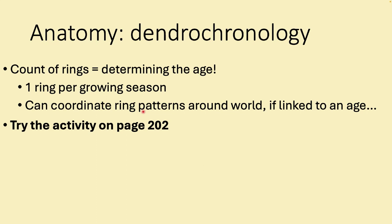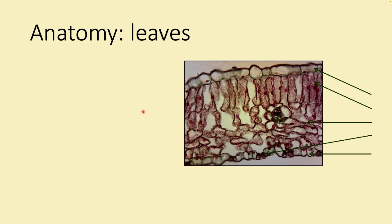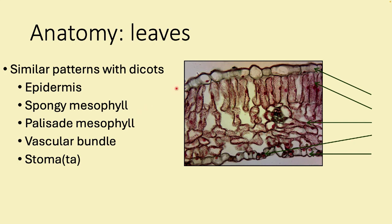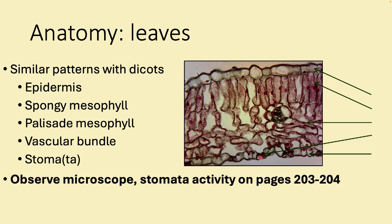Looking at a dicot leaf cross-section: the outer layer is the epidermis. The middle of the leaf is the mesophyll — 'meso' means middle, 'phyll' means leaf. It has two regions: the palisade mesophyll on top where cells are parallel in rows, and the spongy mesophyll below which is loosely arranged like a sponge. There's also a vascular bundle and stomata — one is called a stoma, two or more are stomata.